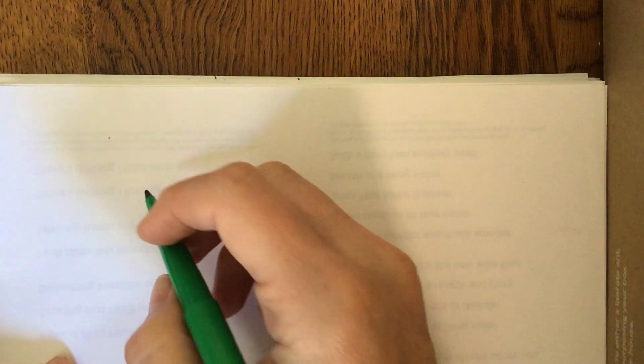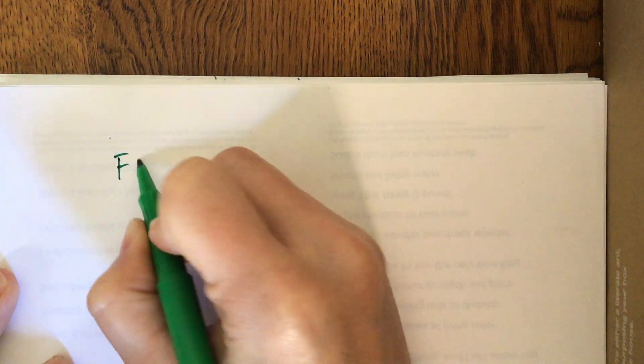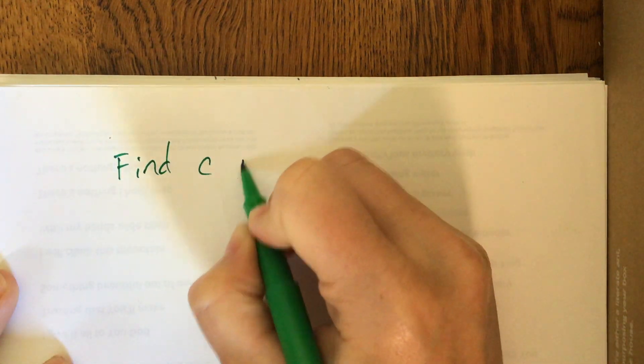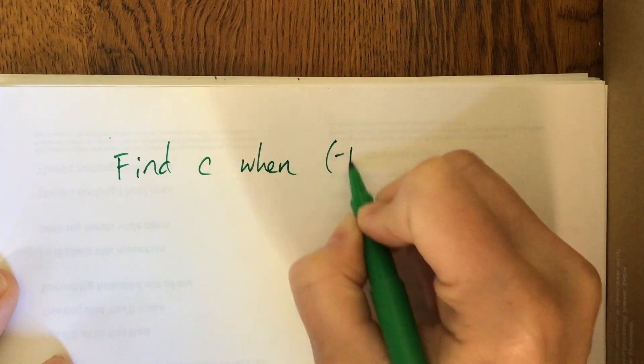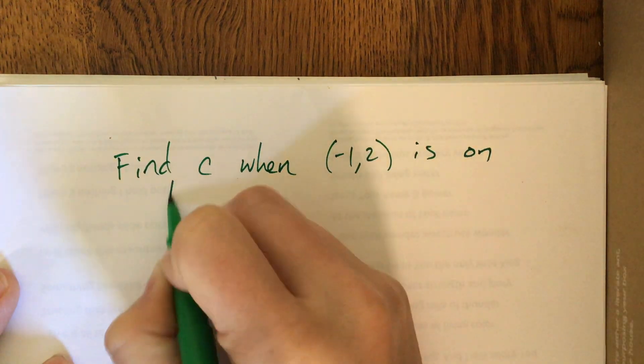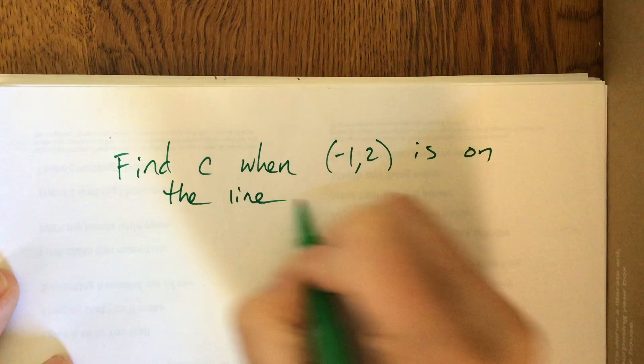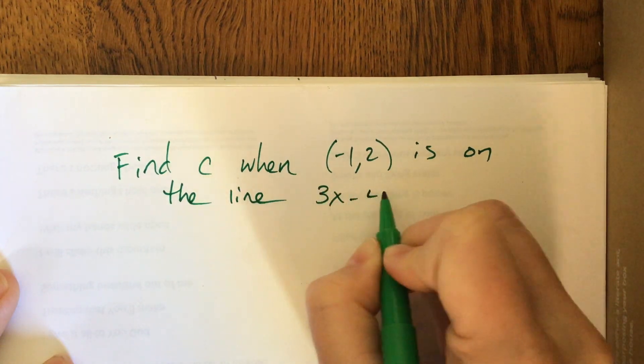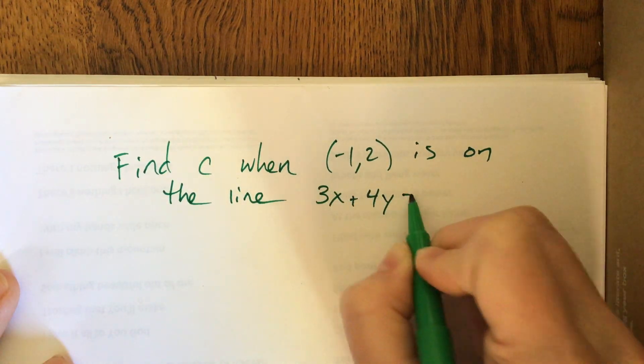Another thing, real fast, because it's not worth the second video, there's some problems in the book that'll say, find c when, I don't know, negative 1, 2 is on the line 3x minus 4 plus 4y equals c.